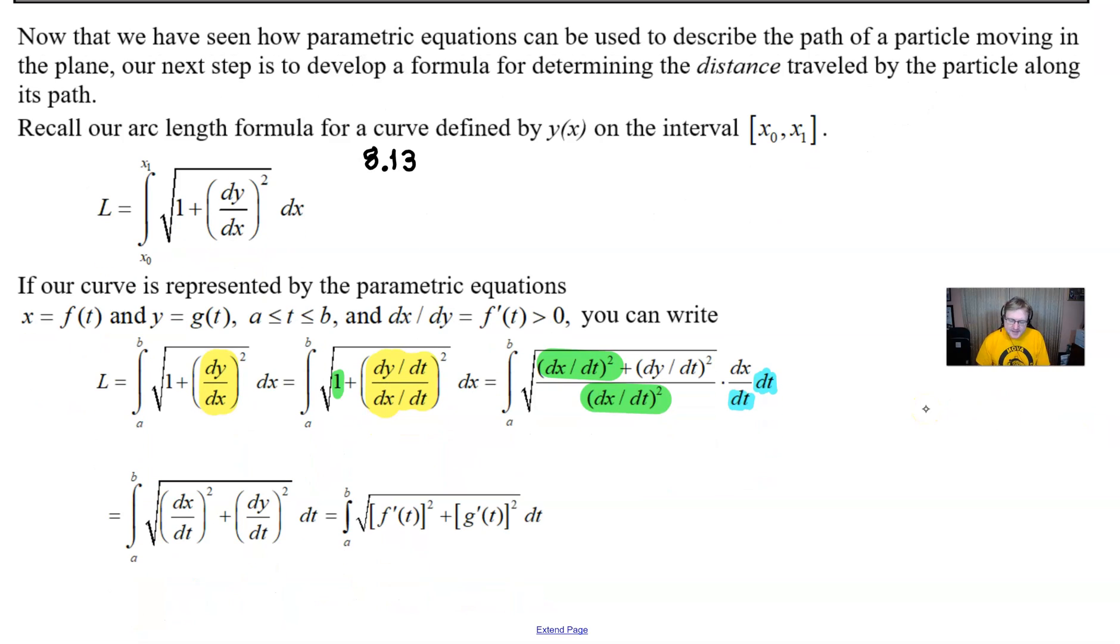So what we're going to do in the next step, well we noticed a couple of things here. First of all, the square root of the (dx/dt)^2 that's in the denominator is just going to leave a dx/dt, and that dx/dt will still be in the denominator and it essentially will cancel with this dx/dt.